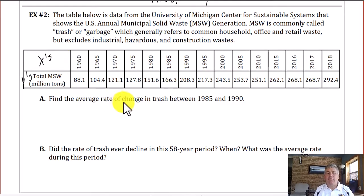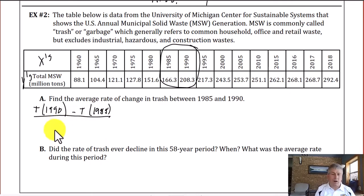We want to find the average rate of change in trash between 1985 and 1990. So we're looking at this portion right here. So in generic terms, our function t of 1990 minus t of 1985 all over our x values of 1990 minus 1985.